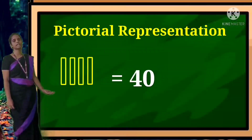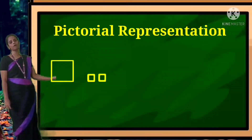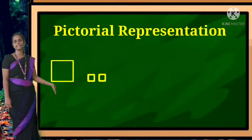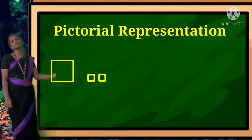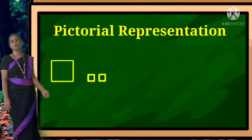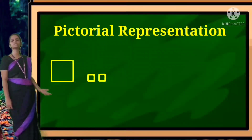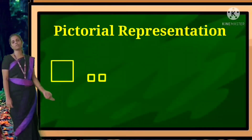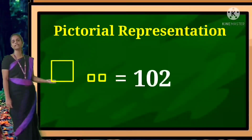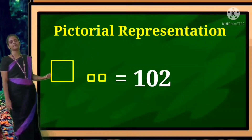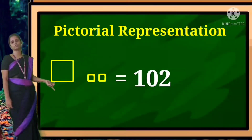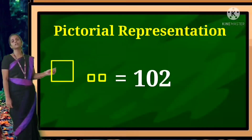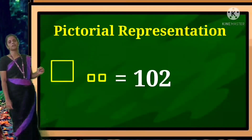Can you see the next box? One big box — hundred box. No tens box. And two small boxes. So: one hundred, zero tens, two ones. You write 102.